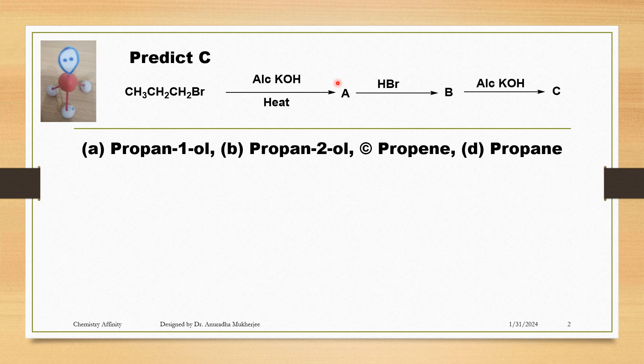You are getting compound A. A is treated with HBr, we are getting compound B. B is treated with alcoholic KOH, we are getting compound C.